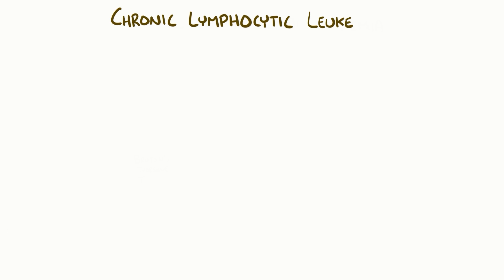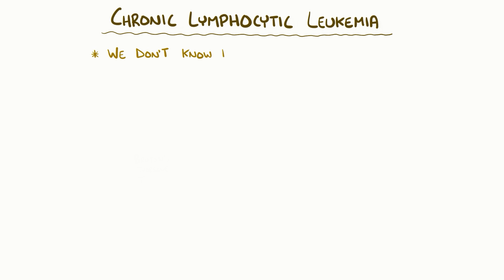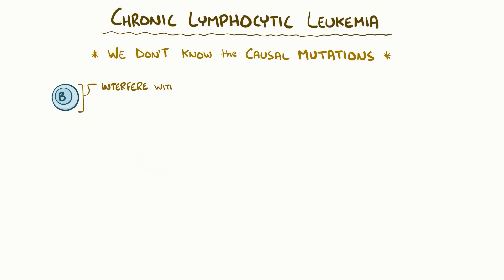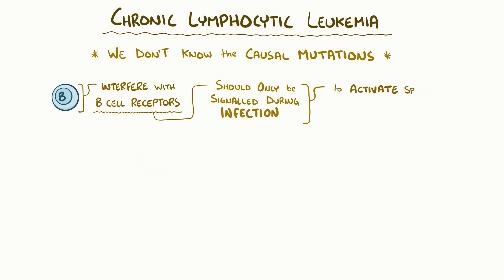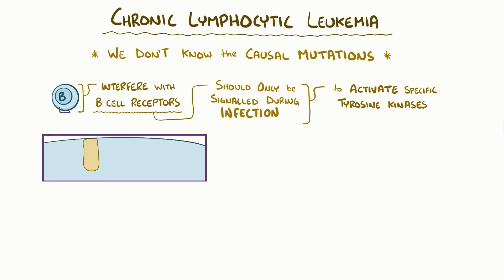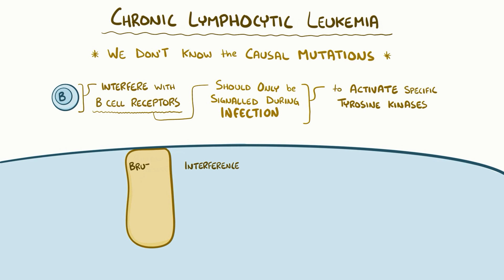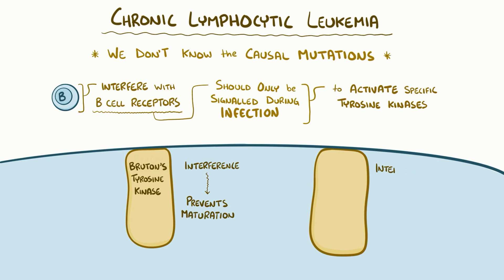In chronic lymphocytic leukemia, the most likely cause is also a mutation in the cell's chromosomes — we just don't know which particular mutation or mutations. Whatever the case, the result is that B cells start to interfere with the pathways of B cell receptors, which should only be signaled during infection to activate a few specific tyrosine kinases. Interference with Bruton's tyrosine kinase, for example, is probably what stops CLL cells from maturing fully, and similar interference with other tyrosine kinases allows them to die slower than they divide, which is why they build up.